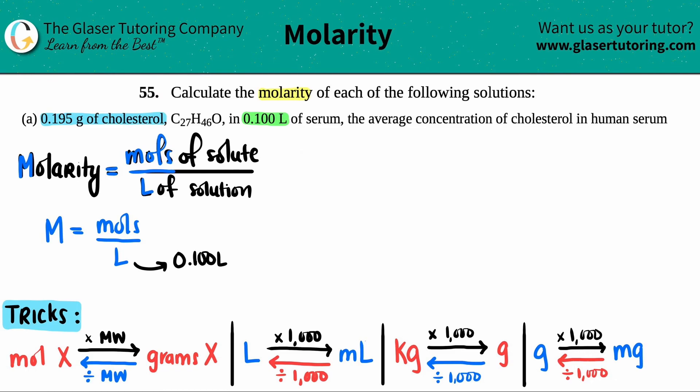The only number I didn't use is the grams. The first thing I have to do is convert the 0.195 grams of cholesterol, C₂₇H₄₆O, into moles of C₂₇H₄₆O.